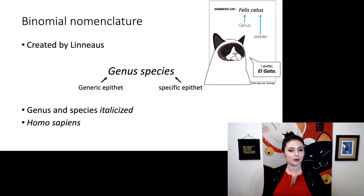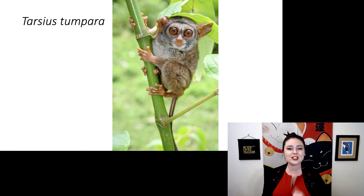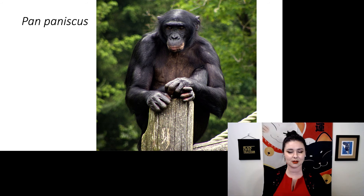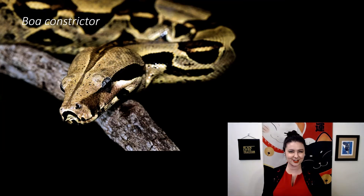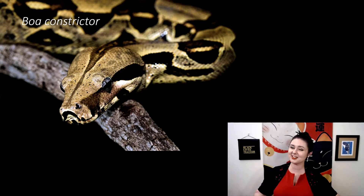Some good examples: Homo sapiens. But we can also look at some cuter species. Here we have Tarsius tumpara, the Siau Island Tarsier — my personal favorite. Notice that gorgeous face with a little bit of white on its underbelly. Next, we have Pan paniscus, or the bonobo — slightly more gracile, with noticeably darker skin. And my very favorite scientific name: Boa constrictor. This is the only species where the scientific name and the common name are exactly the same.